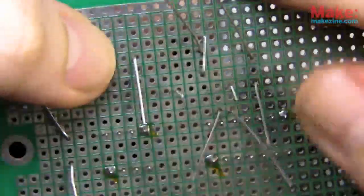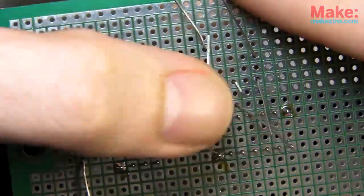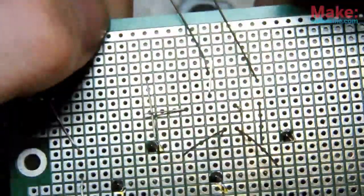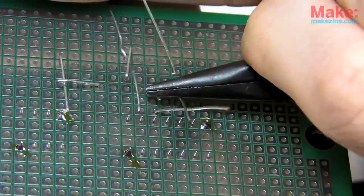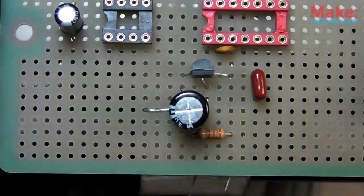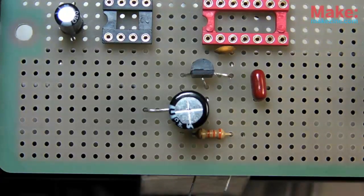Conveniently enough, a lot of connections can be made simply by bending a part lead in the right direction. So far, it looks like this layout will work, so now I can solder in my parts.